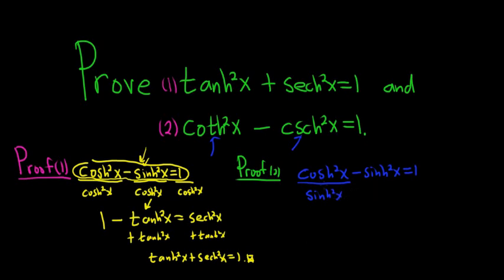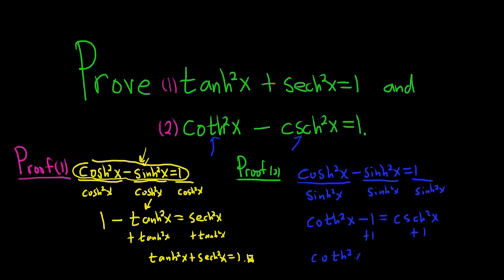Cosine over sine is cotangent, but it's hyperbolic. So we divide by hyperbolic sine squared — divide by hyperbolic sine squared. This gives us hyperbolic cotangent squared minus 1 equals 1 over hyperbolic sine squared, which is hyperbolic cosecant squared. Similar to what we did before, except this time we add 1 to get hyperbolic cotangent squared of x equals 1 plus hyperbolic cosecant squared of x. To finish, we subtract hyperbolic cosecant squared, giving us hyperbolic cotangent squared of x minus hyperbolic cosecant squared of x equals 1. And that completes the proof.